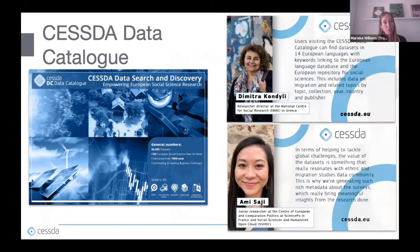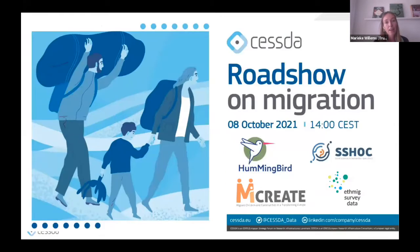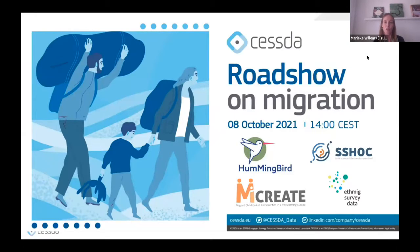In 2020, we worked with CESDA to highlight a series of treasures in their data catalogues. We did a podcast with both Dimitra and Ami to talk about the treasures you can find on migration in the CESDA data catalog. They will touch upon this briefly again today, but we really recommend you listen to the podcast. For this webinar, it's really important to understand that the metadata sourced in all these projects — the Hummingbird project, Shock, MyCreate — will eventually be accessible through the CESDA data catalog as well.